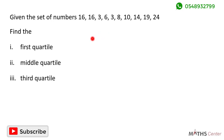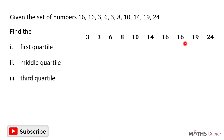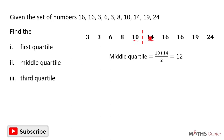The first thing we have to do is to arrange the numbers in ascending order, from the smallest to the highest. When we do that we get 3, 3, 6, 8, 10, 14, 16, 16, 19 and 24. There are 10 in total. When we divide them into two equal parts, we have 5 on the left and 5 on the right. We don't have one number in the middle — the middle is occupied by 10 and 14. So the middle quartile or the median equals the sum of these two numbers divided by 2: 10 plus 14 divided by 2 gives us 12. So the middle quartile is 12.